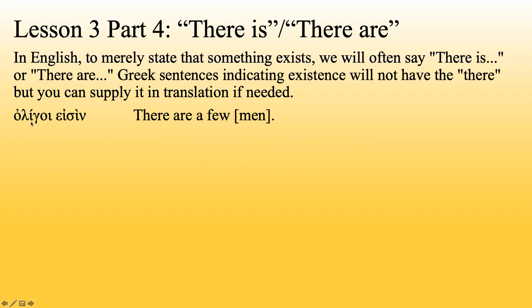So we've got a Greek sentence here, oligoi eisin, which is a few men are, indicating that a few men exist. So in English, we would say there are a few men. We're going to say are because it's plural. The men are plural or the few are plural there.